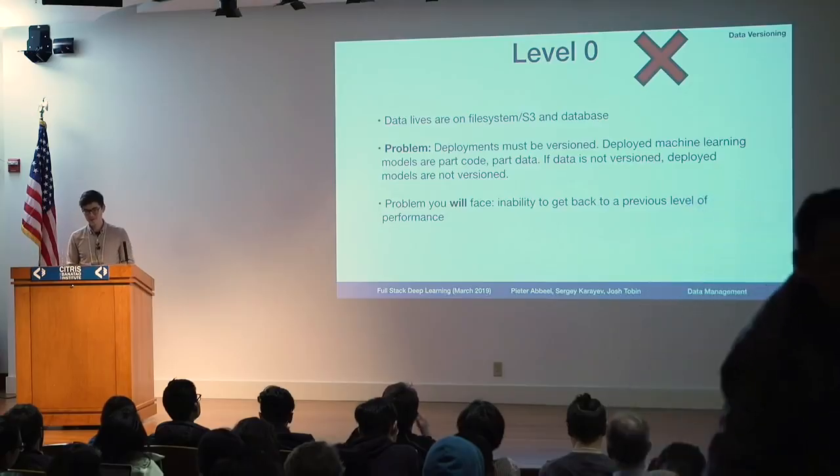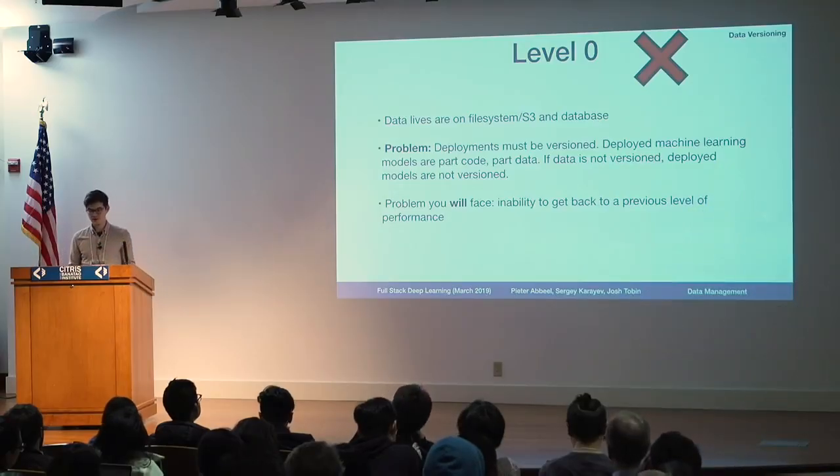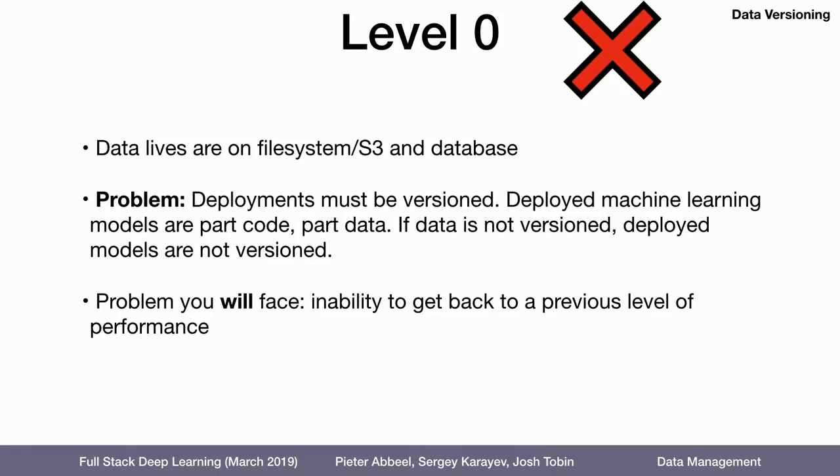The problem with that is that when you deploy the model you trained, it has to be versioned. The deployed machine learning model is part code, part data. If you're deploying something that's part code, part data, and it needs to be versioned but the data is not versioned, then you can't really version the deployed model. At some point you'll want to revert — you'll deploy a model and it'll mess everything up, and you won't know how to go back because you're not properly versioning the model.